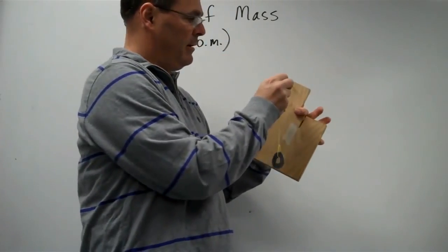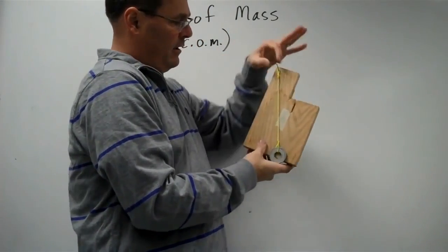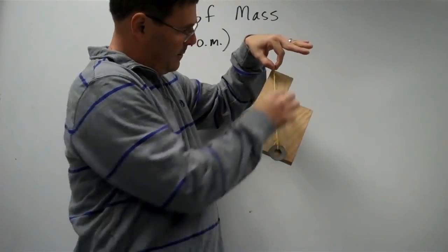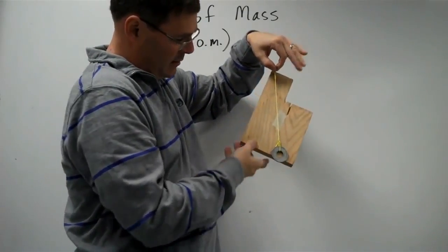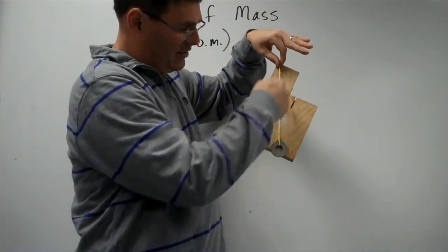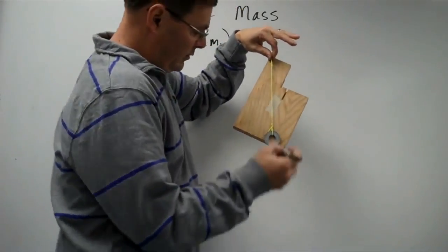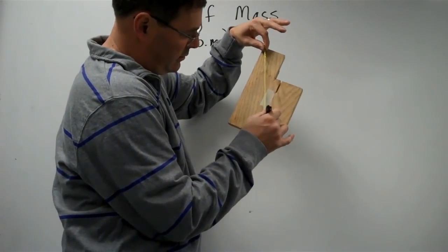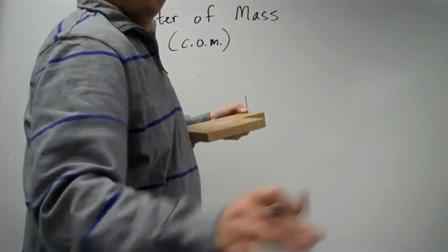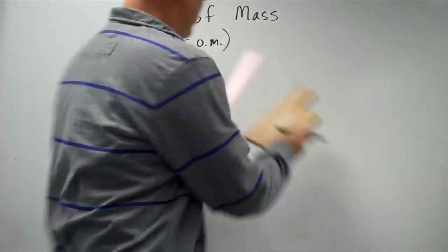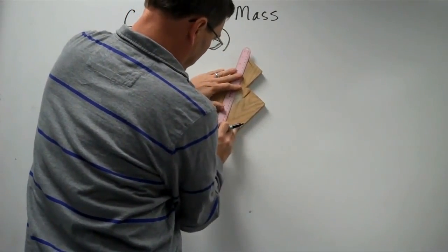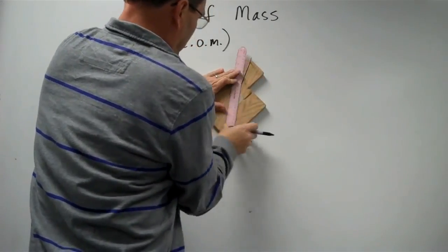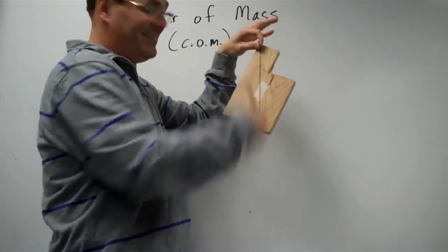So what I'll do is I'll take my plumb bob, I'll hang it from the nail, and now I know that my center of mass is somewhere along that line. So I'll draw a point where the string is, and then I'll connect that point with my ruler. So now I know the center of mass is somewhere along that line.